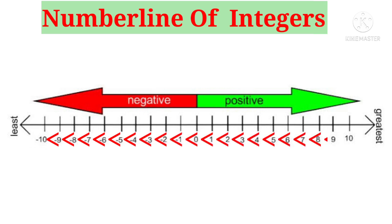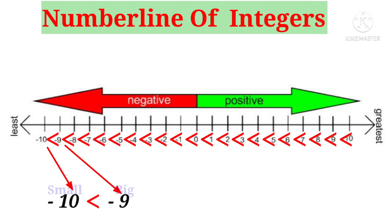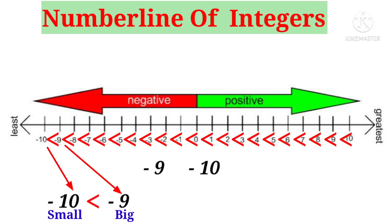So we can put the less than symbol between any two integers. Let us take two negative numbers: minus 10 and minus 9. We can put less than symbol because minus 10 is small and minus 9 is big — they are in order of the number line. If you reverse the order — minus 9, minus 10 — then the symbol is also reversed, that is the greater than symbol.